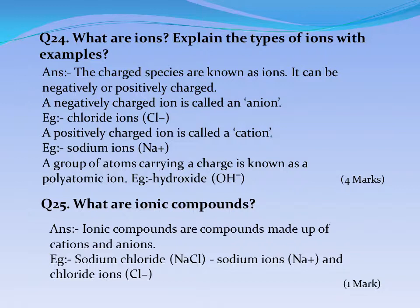Question No. 24: What are ions? Explain the types of ions with examples. Answer: The charged species are known as ions. They can be negatively or positively charged. A negatively charged ion is called an anion. Example: Chloride ions. A positively charged ion is called a cation. Example: Sodium ions. A group of atoms carrying a charge is known as a polyatomic ion. Example: Hydroxide OH⁻.